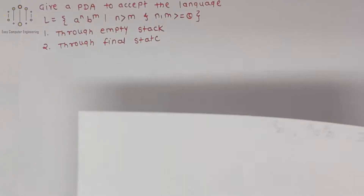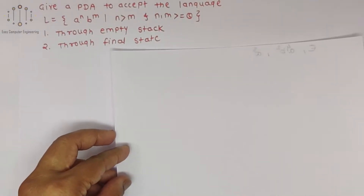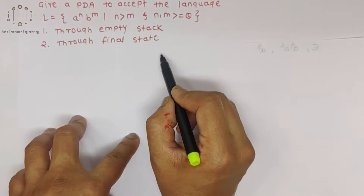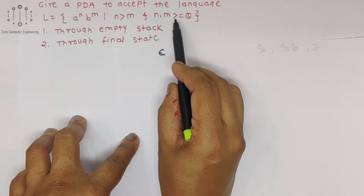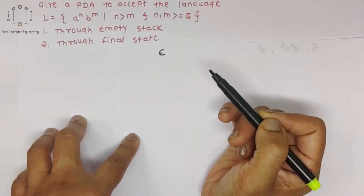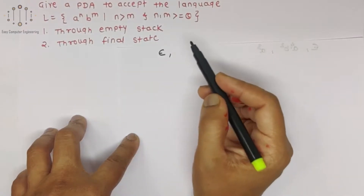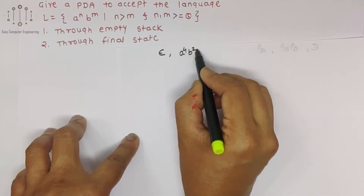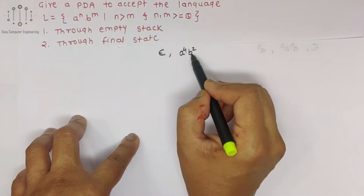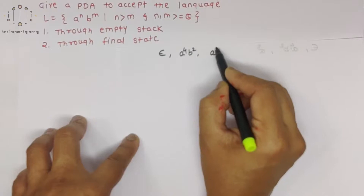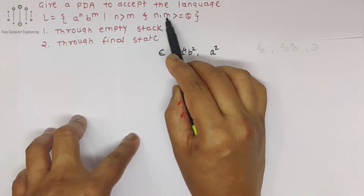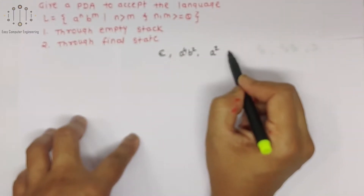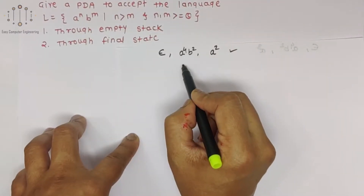So here, how do we handle this language? For example cases: epsilon should be accepted because n, m are greater than or equal to zero. Then a^4 b^2 is also accepted because n is greater than m. Also a^2 alone is accepted because m can be zero, meaning there won't be any b characters.